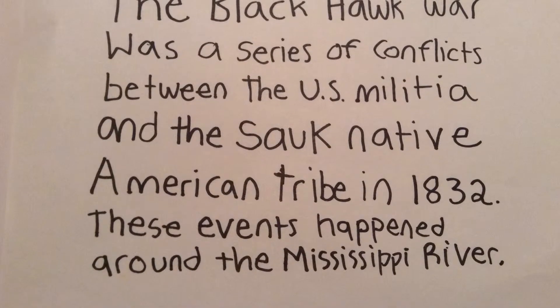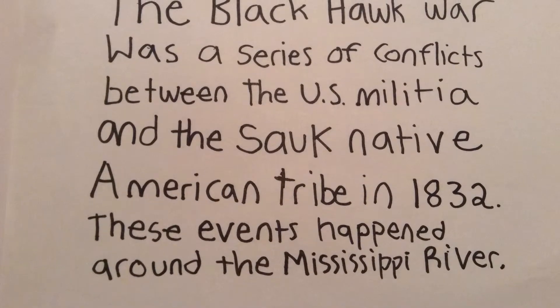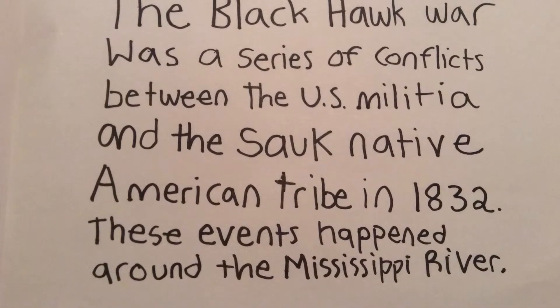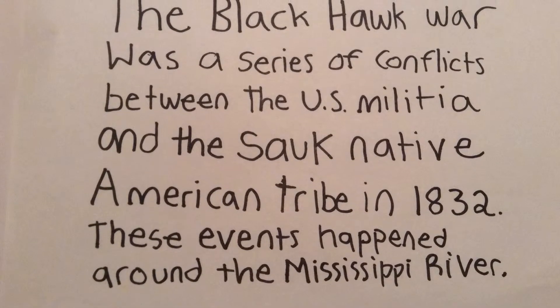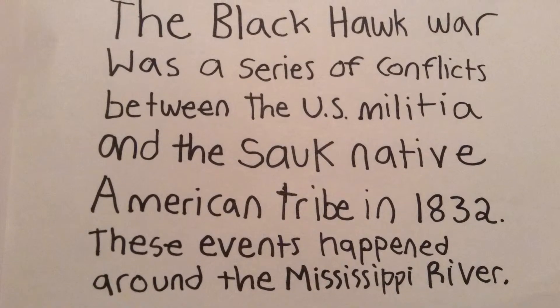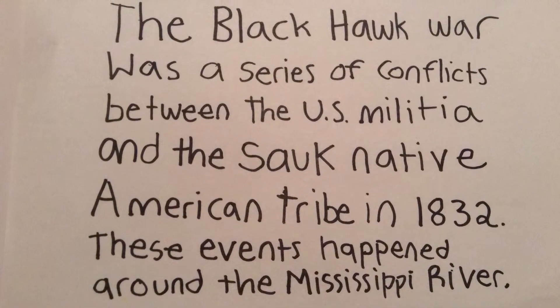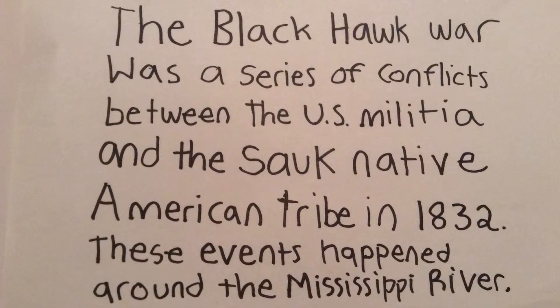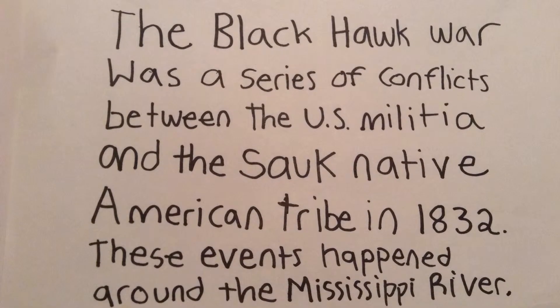The Black Hawk War was a series of conflicts between the US militia and the Sauk Native American tribe in 1832. These events happened around the Mississippi River.